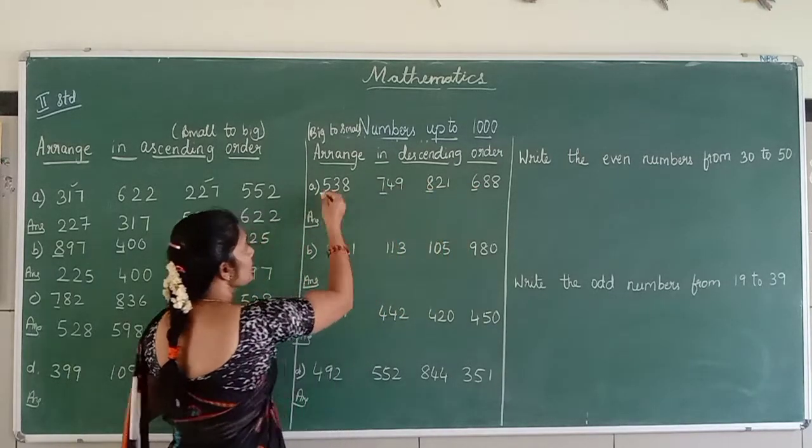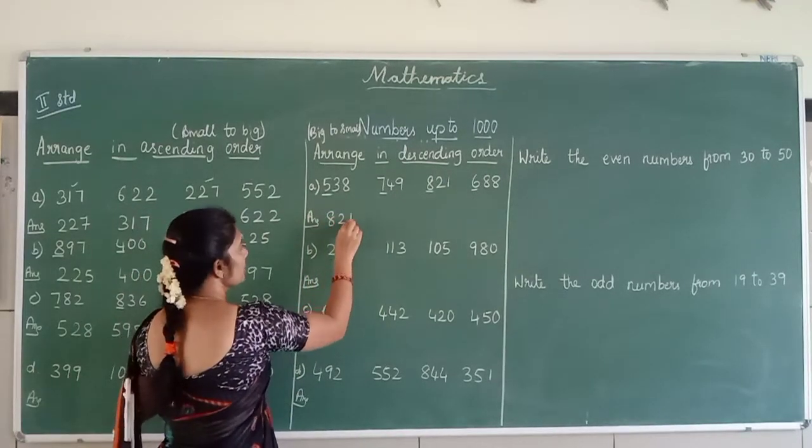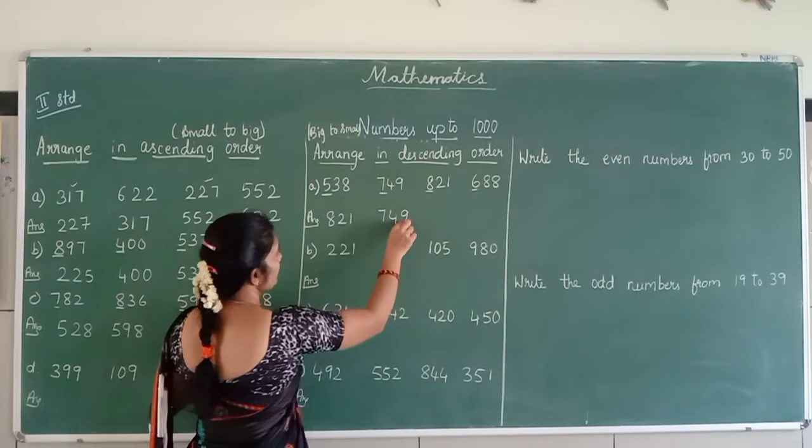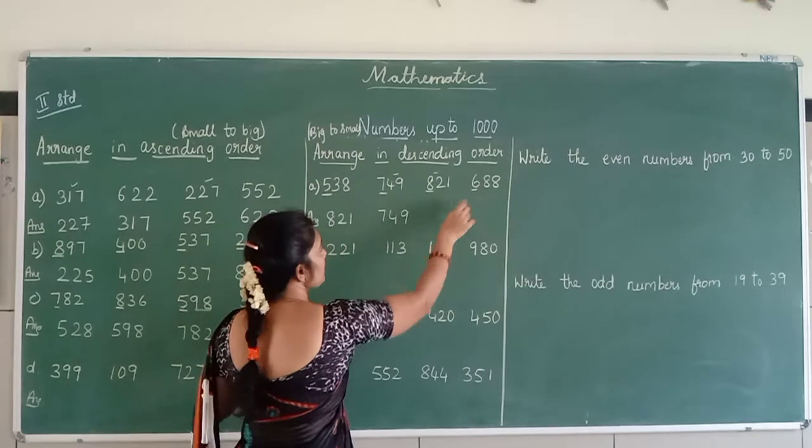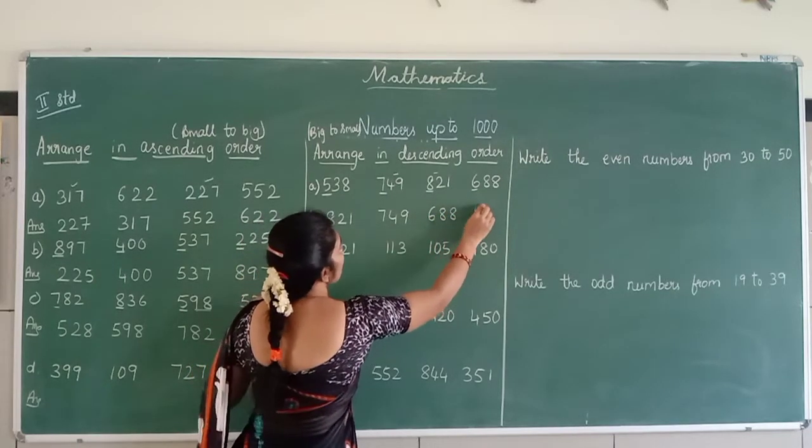So which is the bigger number in this? So the bigger number is 831. Next, the bigger number is 749. So this is done, this is done. 5 is bigger or 6 is bigger? 688 is bigger.